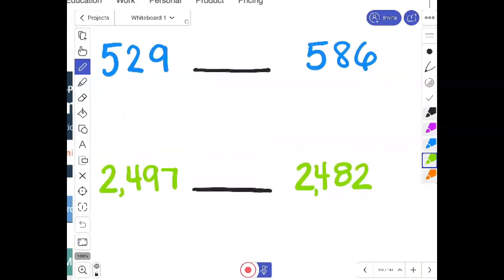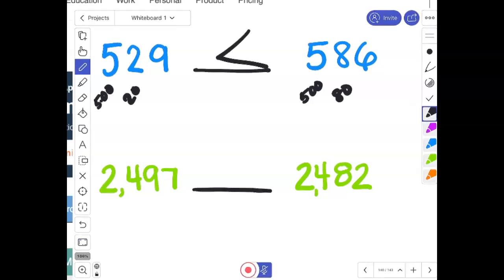So let's look at what we've got here. I'm going to start on the left side. This is 500. So I'm going over my other number. This is 500. Right now, they look the same. 500 is equal to 500. So I'm going to move over one place. This is 20. And this is 80. I don't need to look further. 20 is less than 80. So 529 is less than 586.